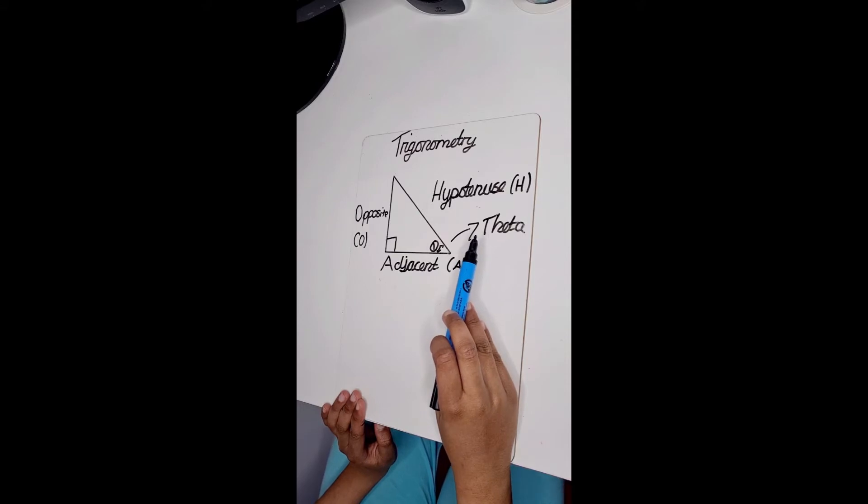Trigonometry helps us find angles and distances. It's used a lot in science, engineering, gaming and more.